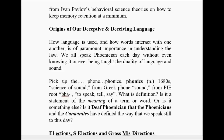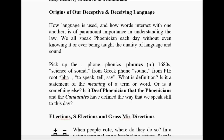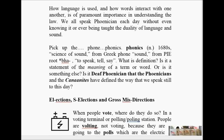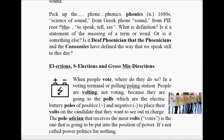Origins of our deceptive and deceiving language. Language is used to interact with one another. It's of paramount importance in understanding law. We speak Phoenician each day without even knowing it. It's the language of sound. Before they had the written word, it was an oral history — oral language. Pick up the phone. Phonics — science of sound from the Greek 'phone,' sound, from the root 'ba' to speak, to tell, to say. What is definition? It's a statement of the meaning of a term or a word. Or is it something else? Is it definition that the Phoenicians and the Cainites have defined the way we speak, still to this day, thousands of years later?